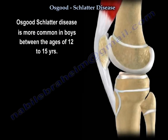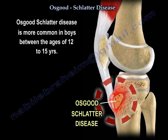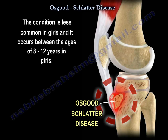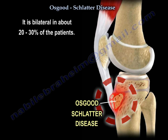Osgood-Schlatter disease is more common in boys between the ages of 12 to 15 years. The condition is less common in girls and it occurs between the ages of 8 to 12 years in girls. It is bilateral in about 20 to 30 percent of patients.